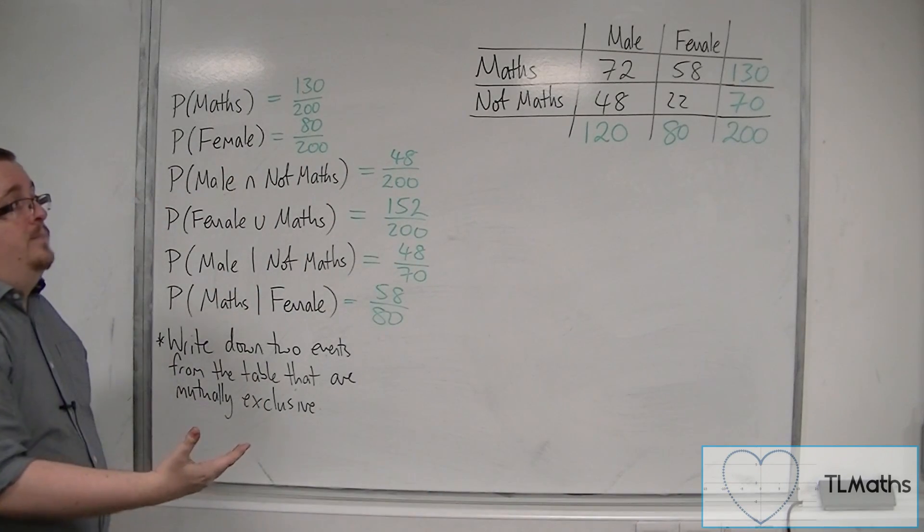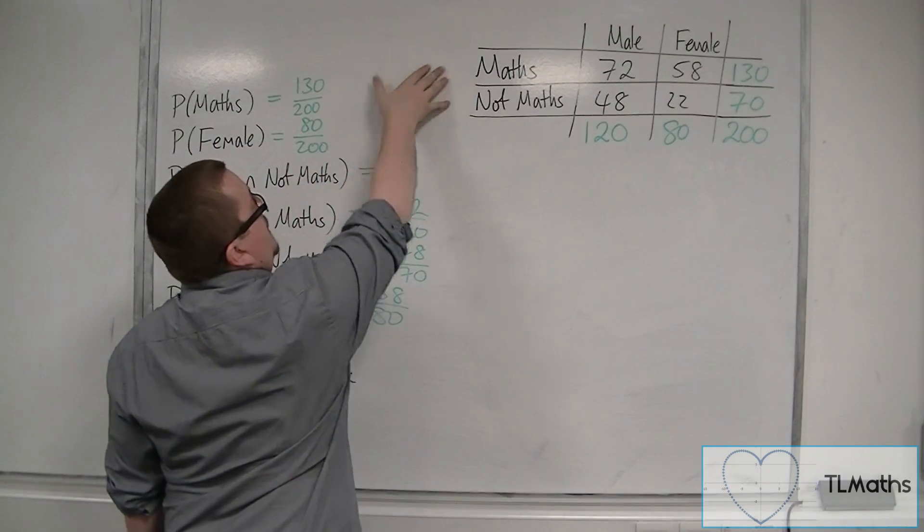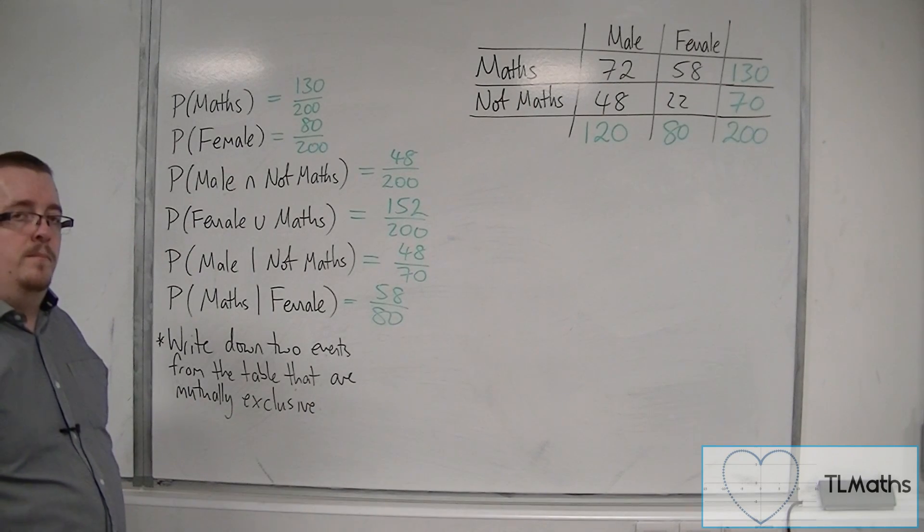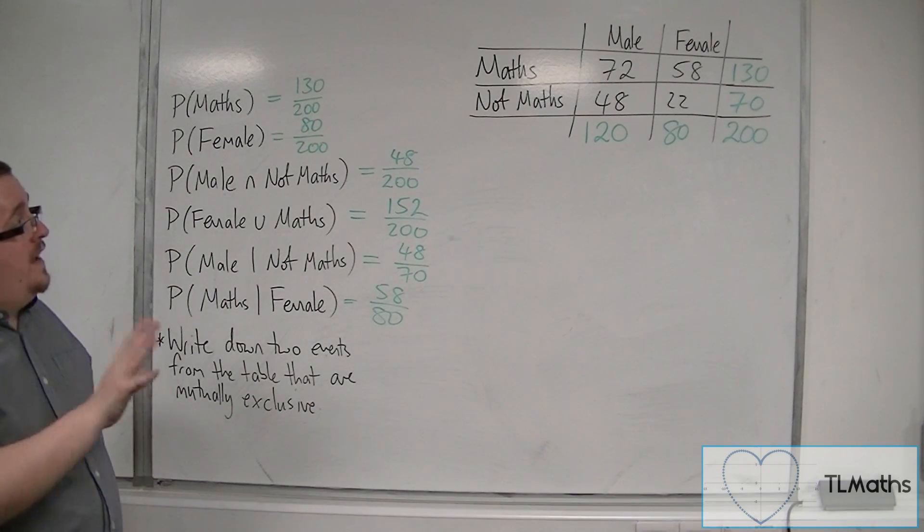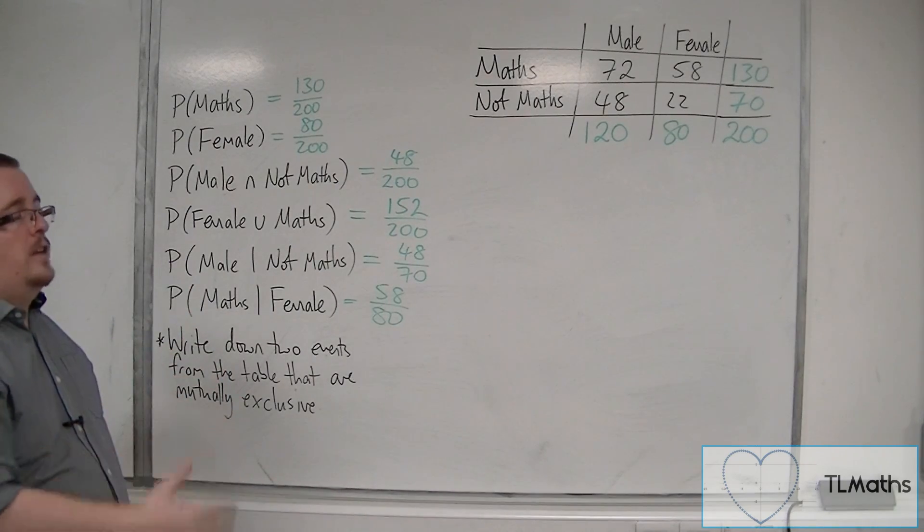Alongside that, you also have another two events, maths and not maths. They are mutually exclusive because they cannot happen at the same time. So you can either have maths and not maths or male and female in the case of this table.